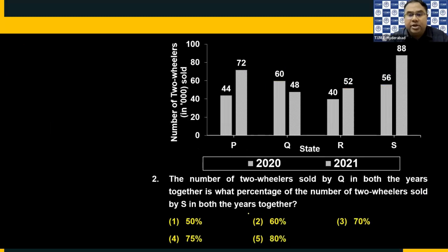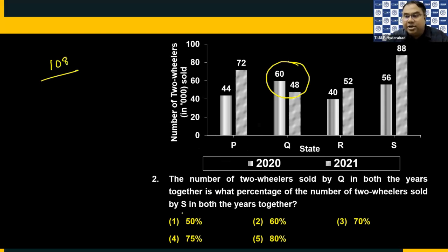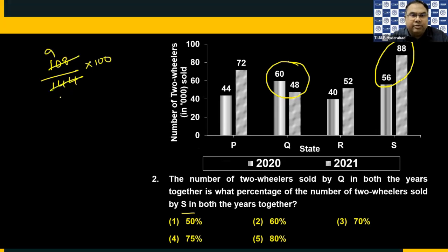Choice five should be your answer. Second question: The number of two wheelers sold by Q in both years together is what percentage of two wheelers sold by S in both years together? Q total: 60 plus 48 equals 108. S total: 56 plus 88 equals 144. So 108 upon 144 — three is a common factor — simplifies to 3 upon 4, which is 75 percent. That is present in choice four.